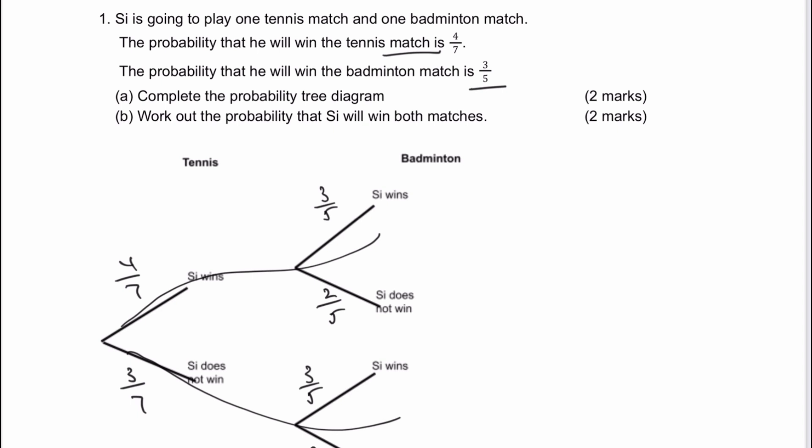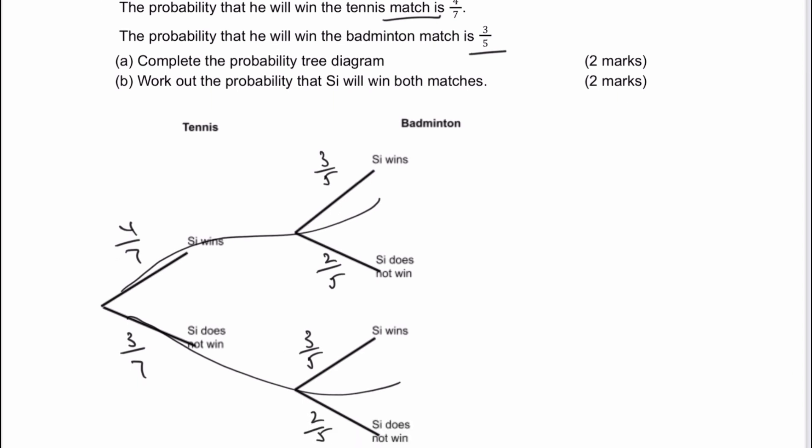Let's have a look at the question then. So we've completed the probability tree diagram and then it says work out the probability that Si will win both matches. So in other words, we're looking at this probability win-win. In this particular case, then we multiply across the branches. So it's four out of seven multiplied by three out of five. And that's going to give us twelve out of thirty-five. And that would be the answer to this particular question.